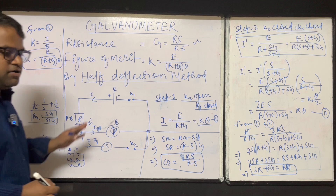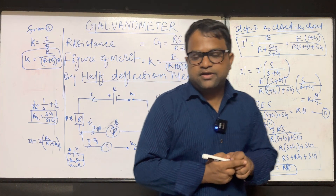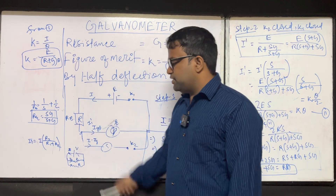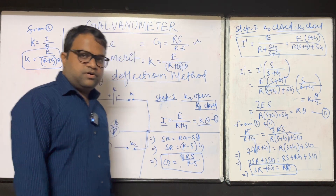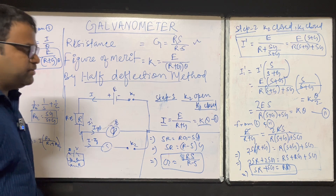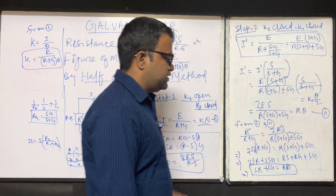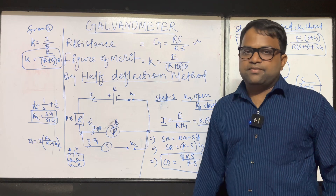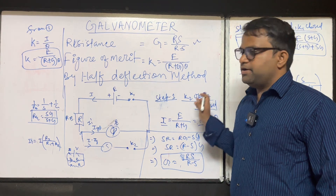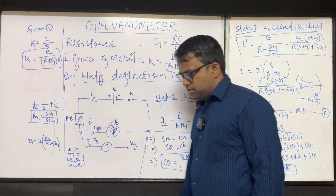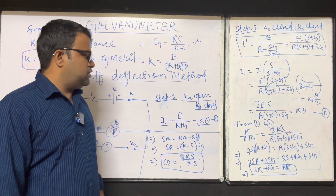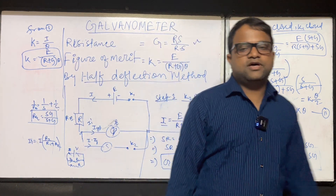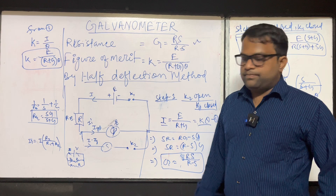The derivation should be clear to you. If you do not understand how the current divides in parallel resistors — i times opposite resistance divided by R1+R2 — you can write in the comment box and I will make a short video on that. If you need any help for this practical or viva questions, ask in the comments. I am planning to upload viva videos for some experiments in December. Thank you for watching.